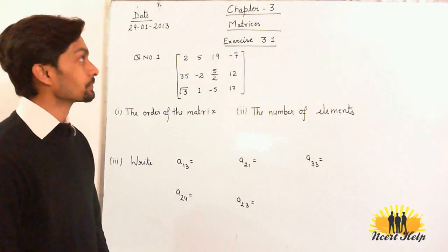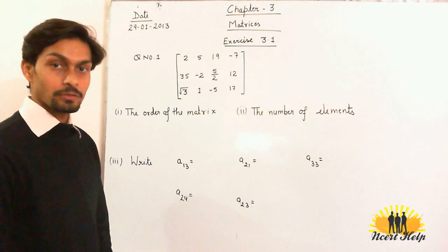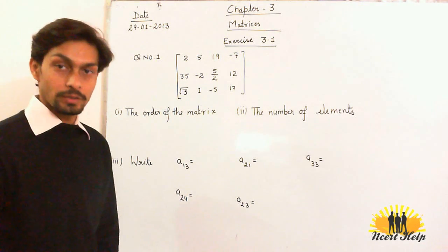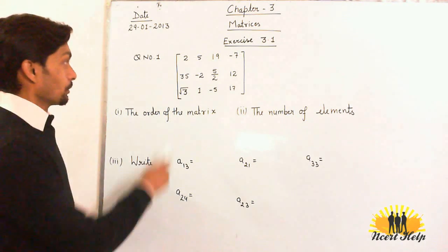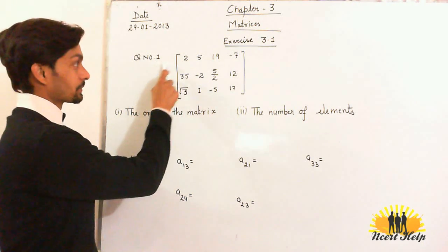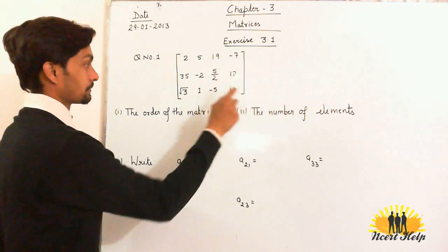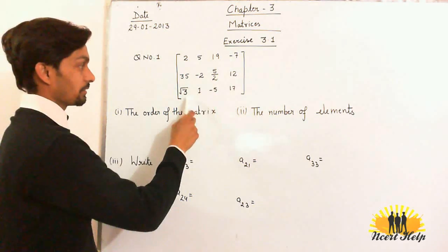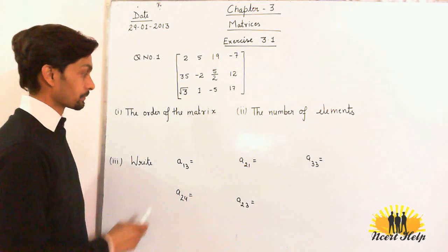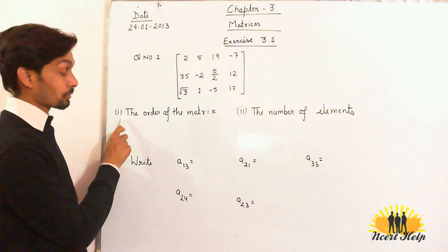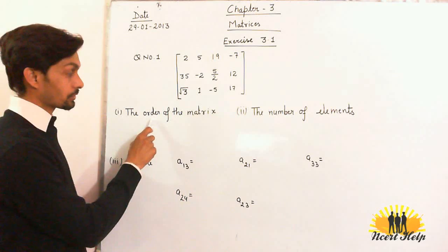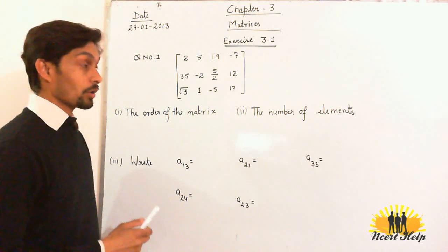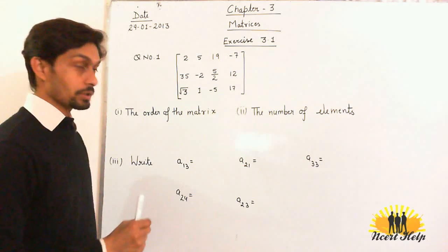Today I will start Chapter 3 of Class 12, that is Matrices, and Exercise 3.1. According to question number 1, a matrix is given — you can see elements are 2, 5, 19, minus 7, up to 17. The first part of the question is to find the order of the matrix. So what is the order of the matrix?